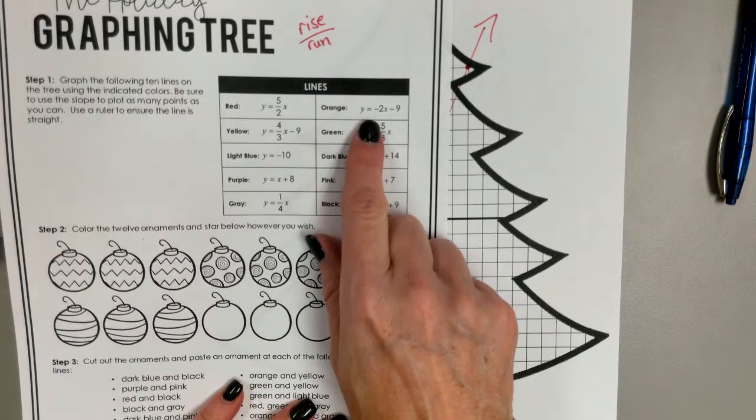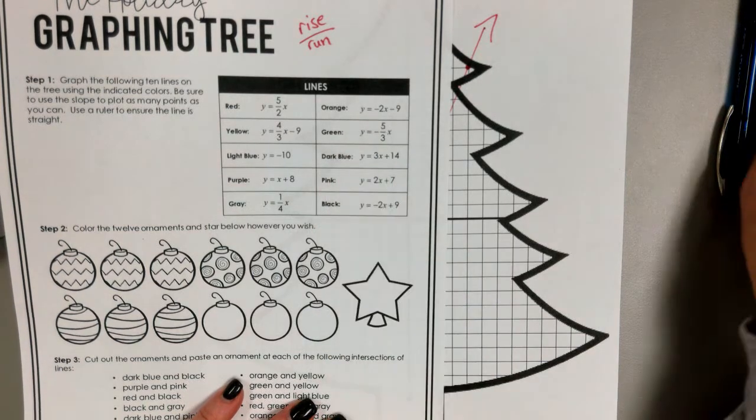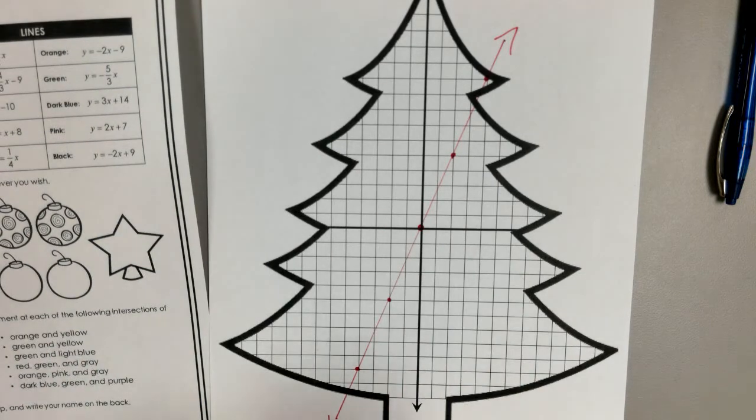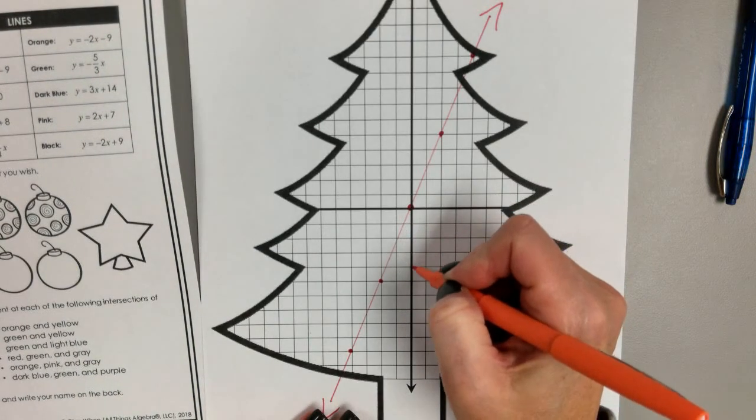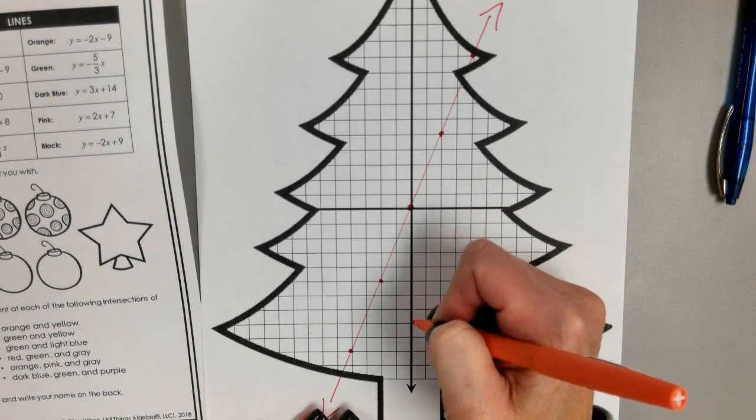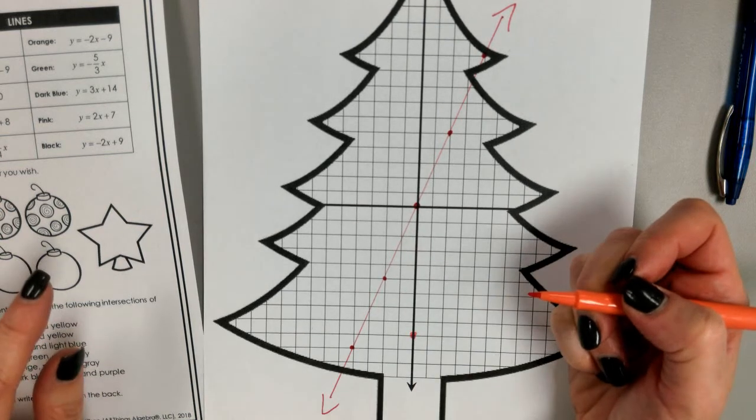All right. Then I'm going to the orange line. This says y equals negative two x minus nine. So minus nine, that means we start at negative nine. One, two, three, four, five, six, seven, eight, nine.